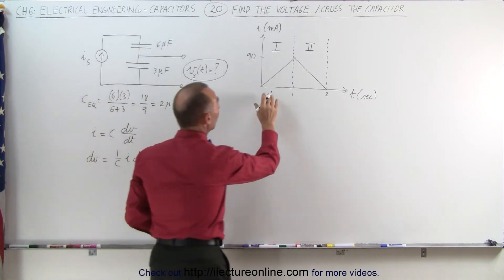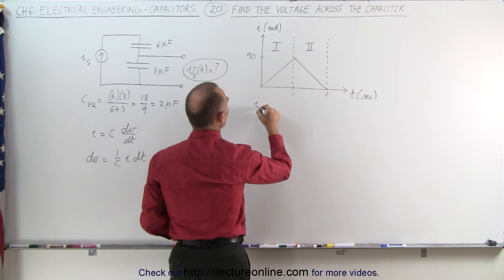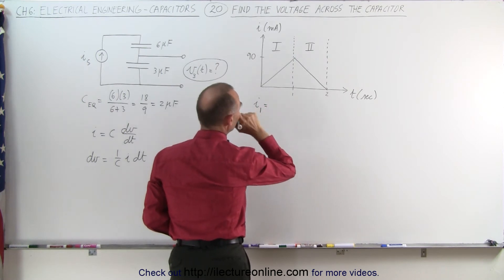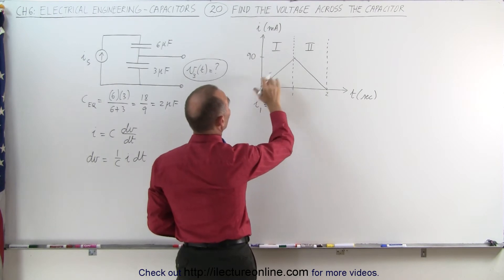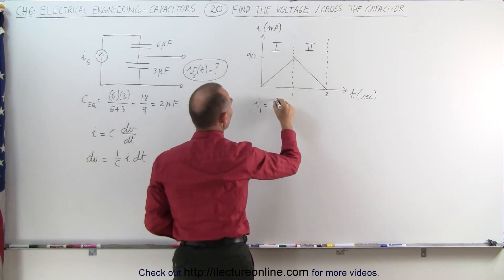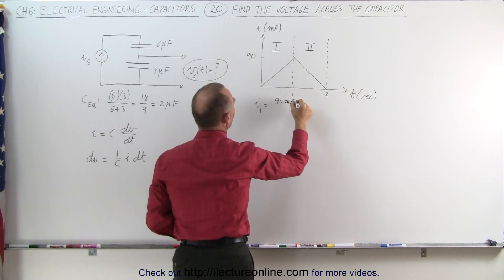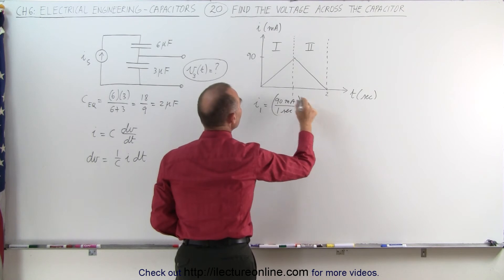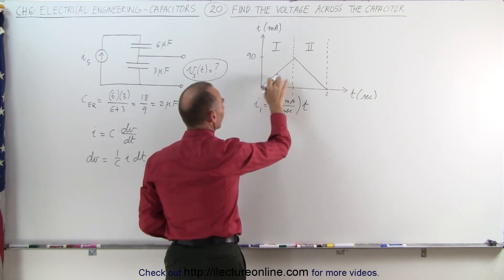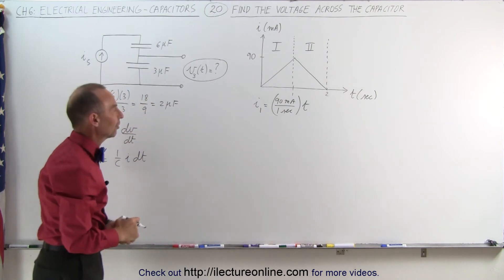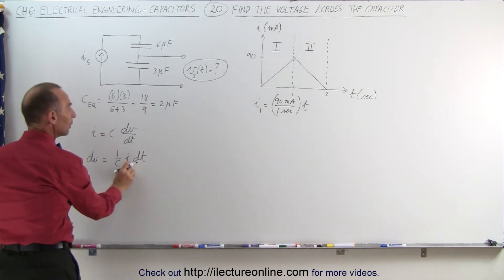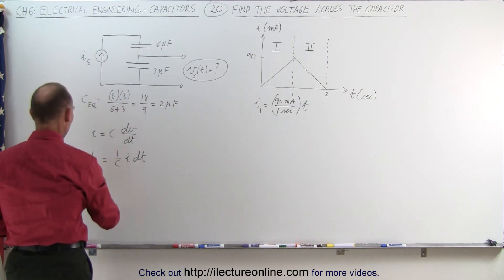Here we can see that in region 1, the current I in region 1 is equal to, that would be like y equals mx plus b, it would be the rise over the run, the rise is 90 milliamps, divided by the run, which is 1 second, times the variable T, and of course since the curve goes right to the origin, we don't have an intercept, the intercept is 0.